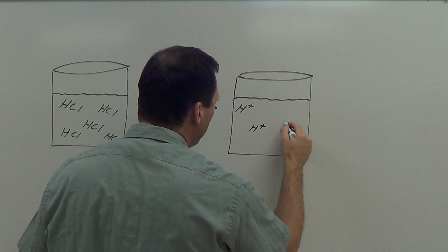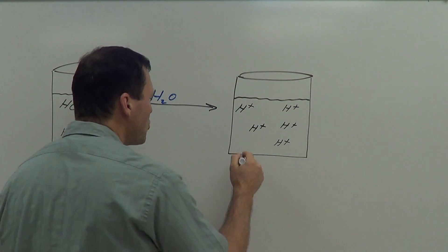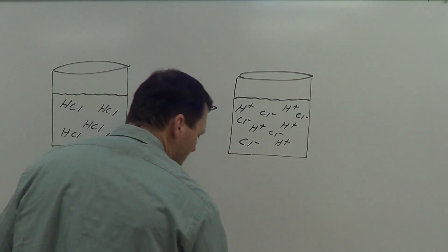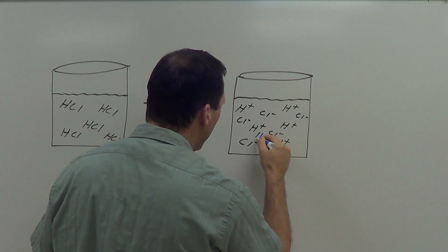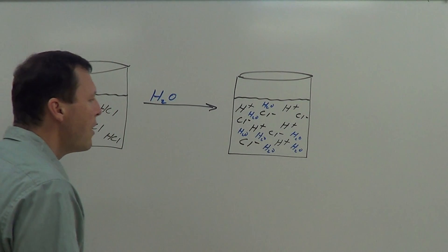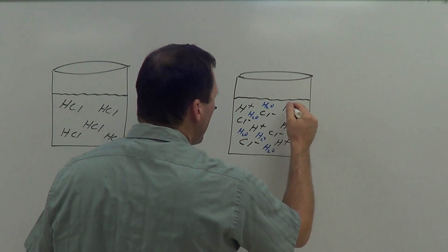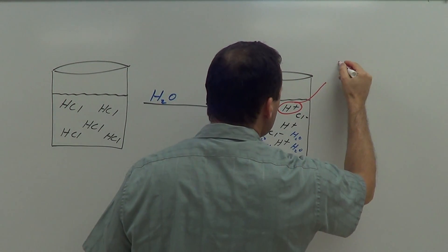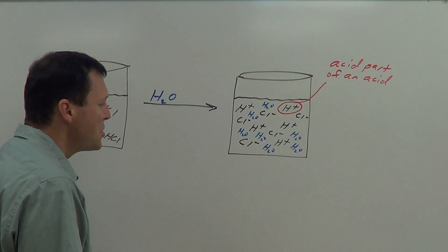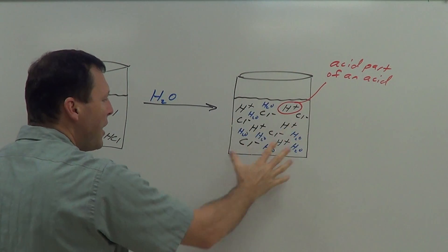We're going to have lots of these hydrogen ions floating around in solution. The chlorine atom gains that electron, so it takes on a negative charge — giving us lots of chlorine ions floating around as well. Water molecules are also present in this solution. This is a solution of hydrochloric acid. What makes an acid an acid? This hydrogen ion — this is the acid part of an acid. Different types of acids are made by different ions; this one is hydrochloric acid because of the chlorine ion.